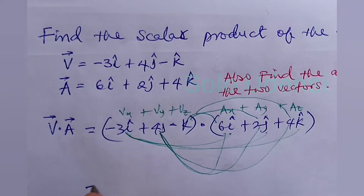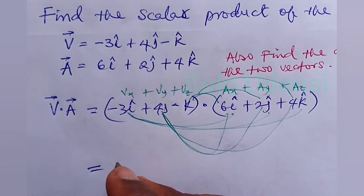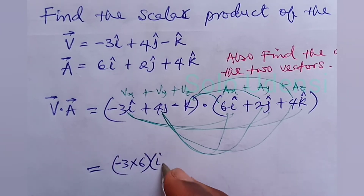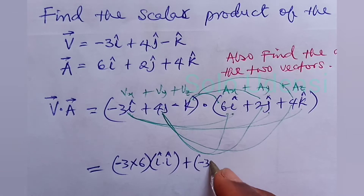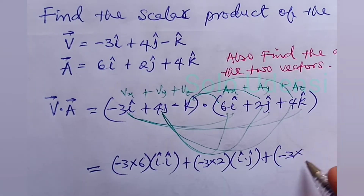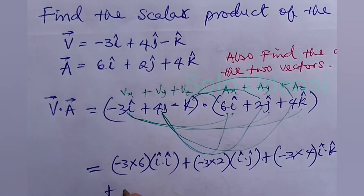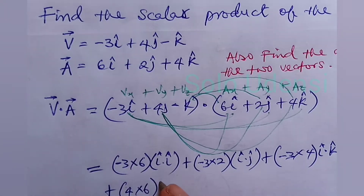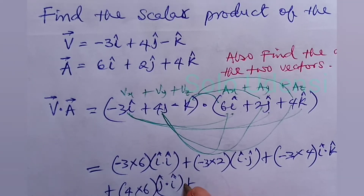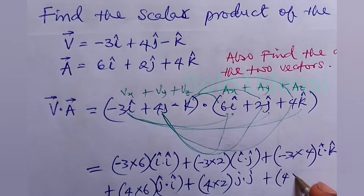We get: minus 3 times 6 (î dot î), plus minus 3 times 2 (î dot ĵ), plus minus 3 times 4 (î dot k̂), plus 4 times 6 (ĵ dot î), plus 4 times 2 (ĵ dot ĵ), plus 4 times 4 (ĵ dot k̂).